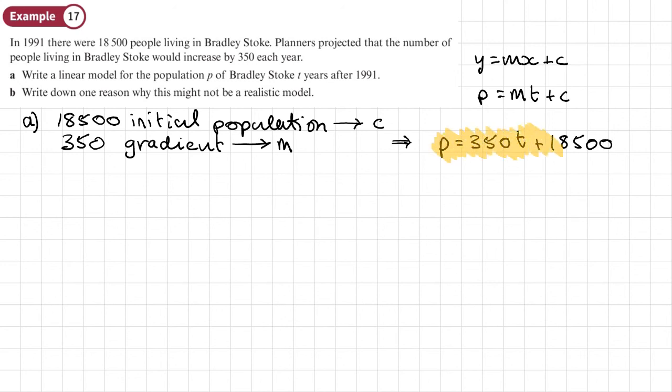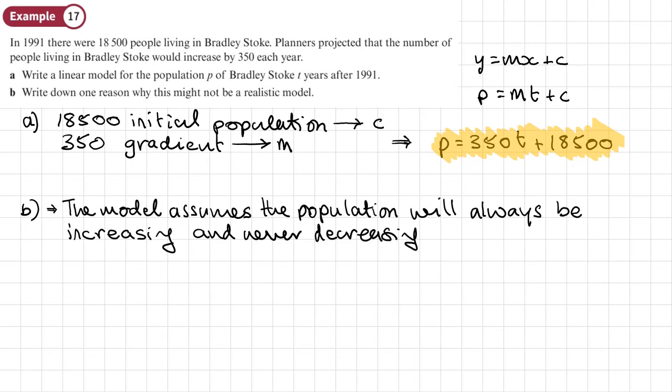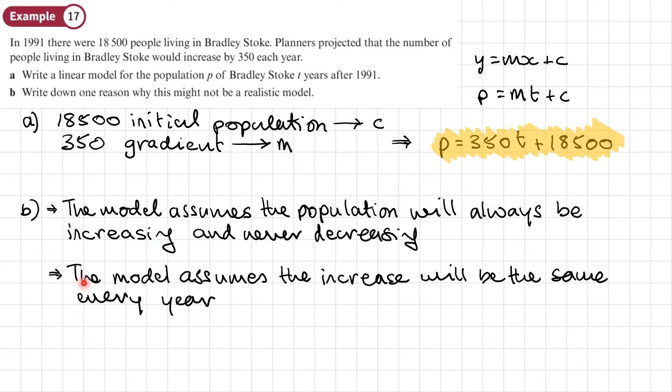Okay, let's go into part B. And part B says, write down one reason why this may not be a realistic model. Now I'm going to write down several reasons and then you can just pick one of these. So one reason might be that this model assumes that the population will always be increasing and never decreasing. Or another reason might be the model assumes the increase will be the same every year. In other words, that it will always be 350 every year.